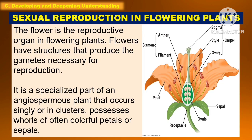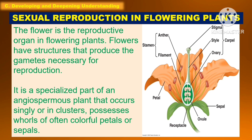The following are the sexual reproduction in flowering plants. The flower is the reproductive organ in flowering plants. Flowers have structures that produce the gametes necessary for reproduction. It is a specialized part of an angiospermous plant that occurs singly or in clusters, and possesses whorls of often colorful petals or sepals.